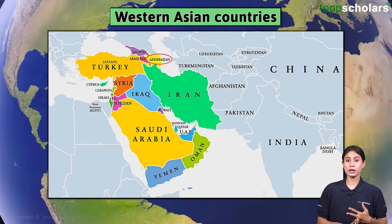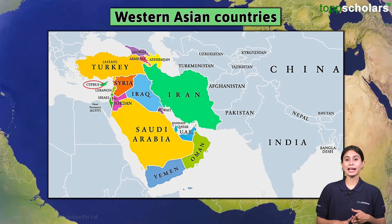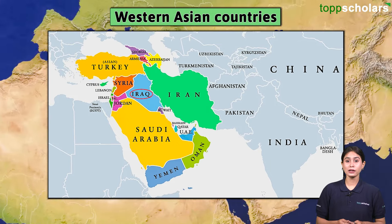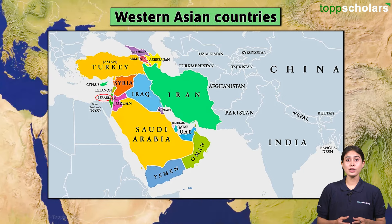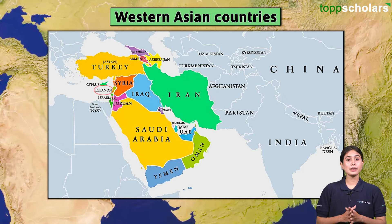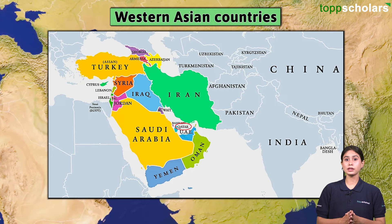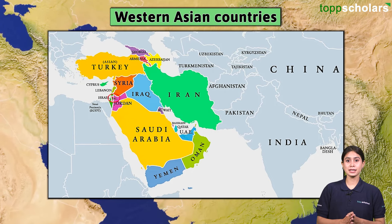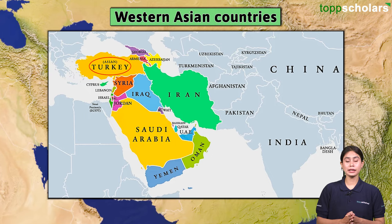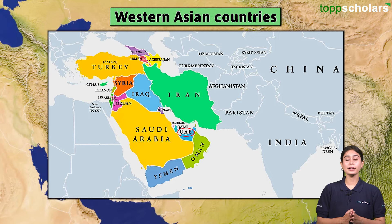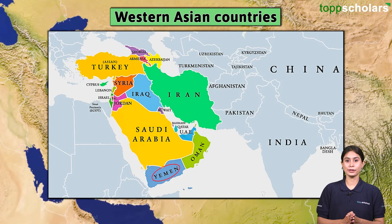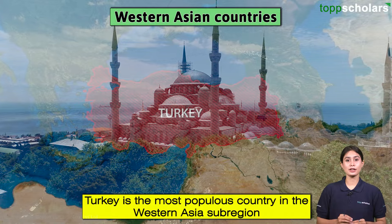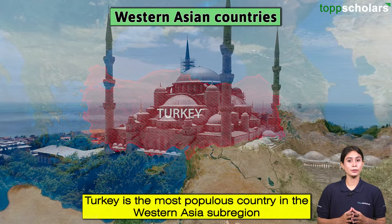The 19 Western Asian countries are: Azerbaijan, Bahrain, Cyprus, Georgia, Iraq, Iran, Israel, Jordan, Kuwait, Lebanon, Oman, Qatar, Saudi Arabia, the State of Palestine, Syria, Turkey, the United Arab Emirates, and Yemen. Turkey is the most populous country in the Western Asia sub-region, with a population of over 84 million.